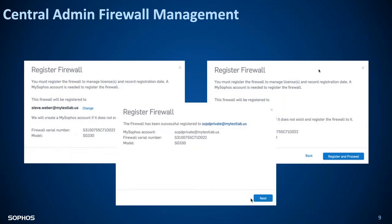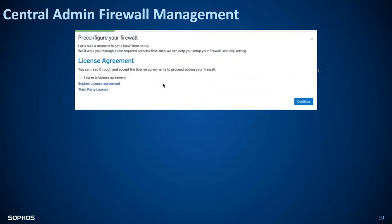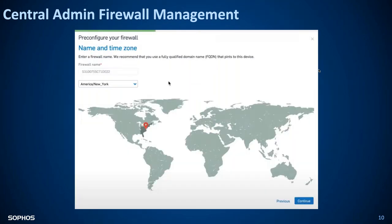We'll hit Register and Proceed. This confirms the firewall has been successfully registered and shows which account you have selected. If you pre-registered it, it will still show this information but will not move the firewall — it doesn't have permission to do that. It will stay in that MySophos account you set it up with. Next, we go through a configuration of the XG firewall just like you would on the device itself, but this is inside Sophos Central. You'll accept the license agreement and select a name — either a fully qualified domain name or just a friendly name.